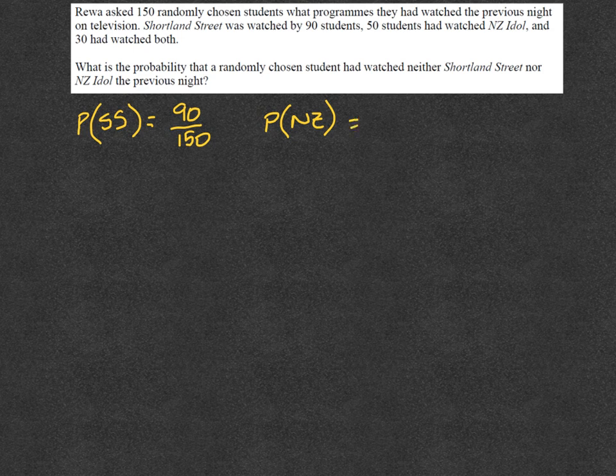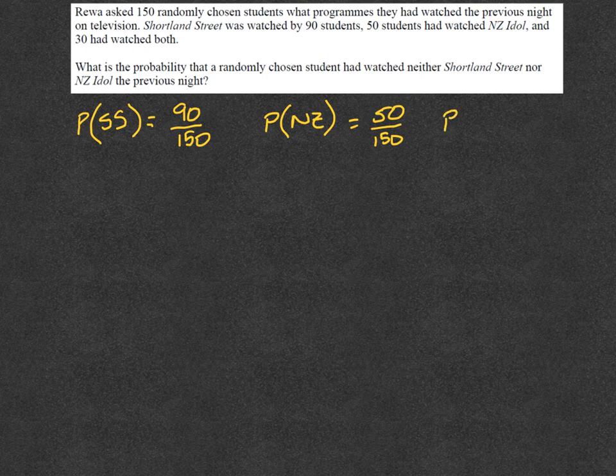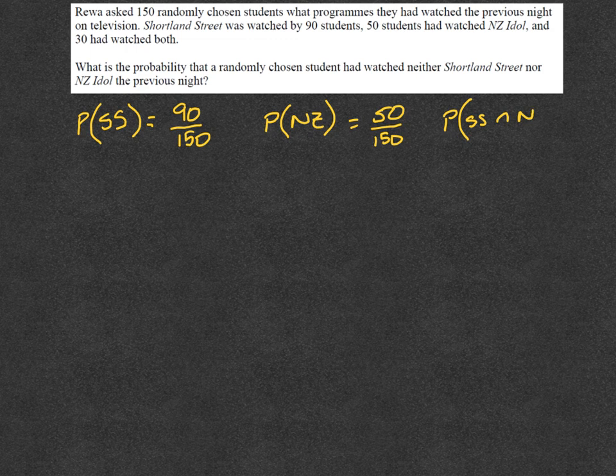And then we're also told that the probability of them watching both, so SS intersection NZ Idol, is equal to 30 over 150.